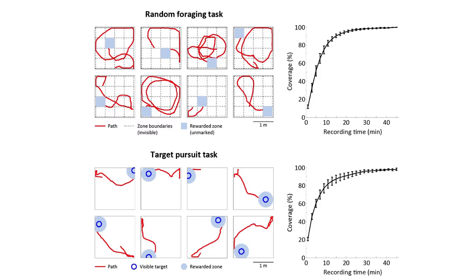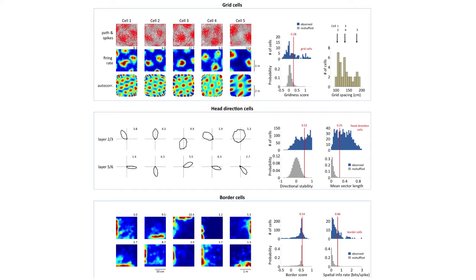In a large group of recordings, Dimitri showed there were grid cells from two or three different modules with different spacing that could be recorded in the medial entorhinal cortex during virtual navigation. Head direction cells shown in polar plots looked very similar to those recorded in a real environment. Border cells and traditional place cells were also observed. That was our first inkling that these animals were really engaged in the virtual reality environment.